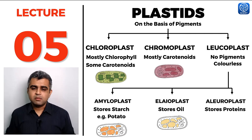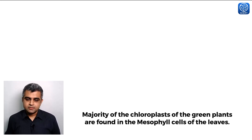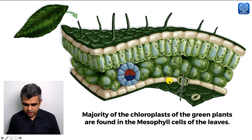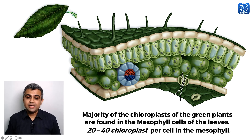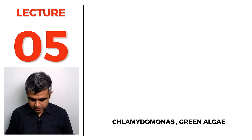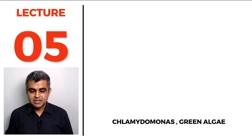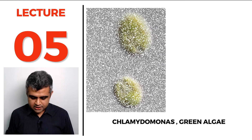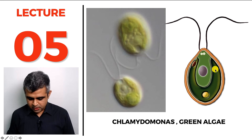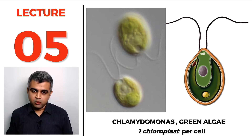Most chloroplasts of green plants are found in the mesophyll cells of leaves. In a cross-section of a leaf, the mesophyll cells contain the little green chloroplasts, and there can be 20 to 40 chloroplasts per cell. However, some single-celled organisms like Chlamydomonas have only one single chloroplast, so the number ranges from one in Chlamydomonas to 20 to 40 in the mesophyll cells of higher plants.